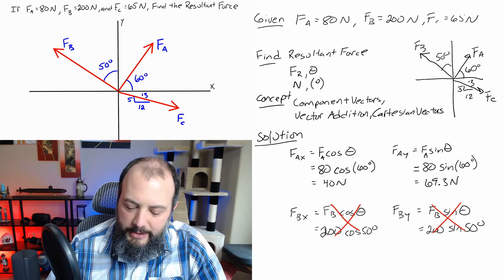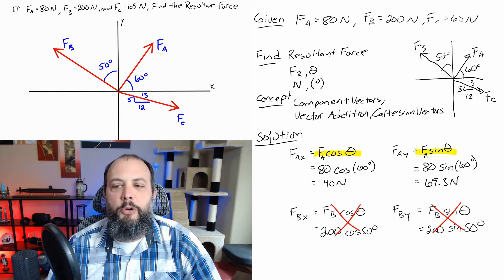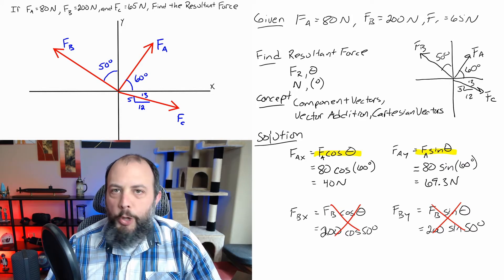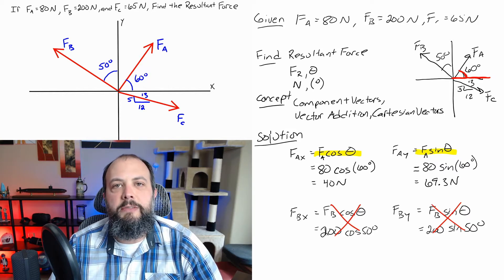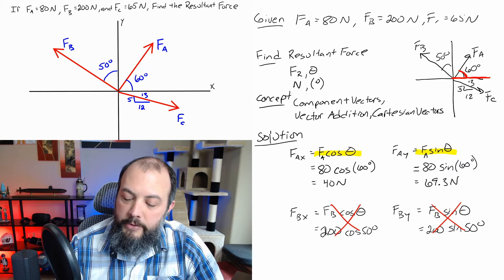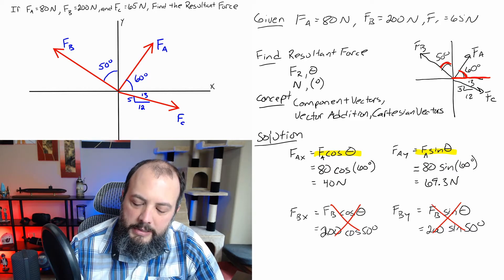The reason this is a mistake is that F cosine theta and F sine theta don't always apply. I'd recommend you don't write in your notes that F_x equals F cosine theta, because it's not always true. F_x equals F cosine theta is true only when your angle is measured to the positive x-axis. The 60-degree angle for F_A was measured to the positive x-axis, so that worked. It doesn't work for F_B because the 50-degree angle is measured to the y-axis.